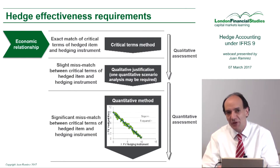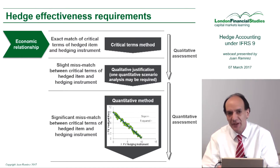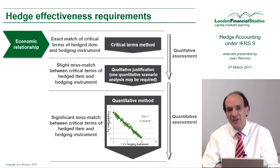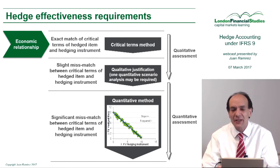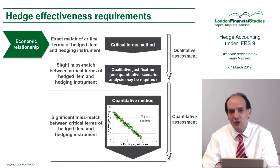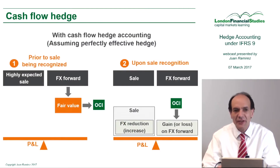One method is called the critical terms method. This method can be used when the critical terms — the main terms of the hedge item and the hedging instrument — exactly match. It is a qualitative approach; all we need is to justify that because of this exact match of critical terms, the hedge is highly effective.